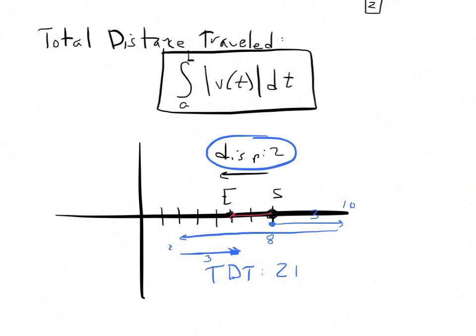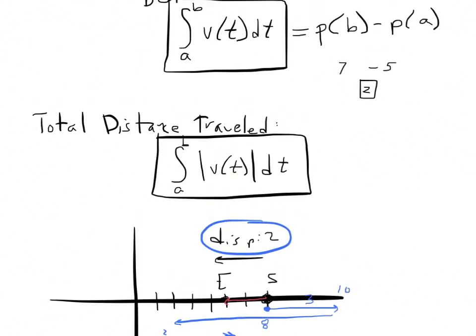Displacement is simply the change in position, and we do that by integrating velocity. Total distance traveled is literally how far the thing went, and we do that by integrating the absolute value of velocity. I've got two examples: a non-calculator problem using a graph, and a calculator problem without a graph.